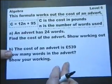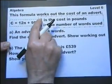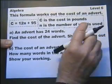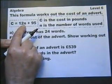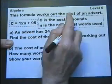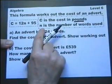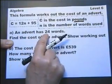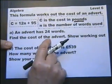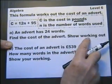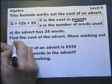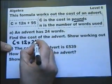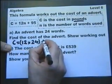A little bit of algebra. This formula works out the cost of putting an advert in a magazine. C equals 12 multiplied by n plus 95. Where C is the cost in pounds and n is the number of words used. An advert has 24 words. Find the cost of the advert.